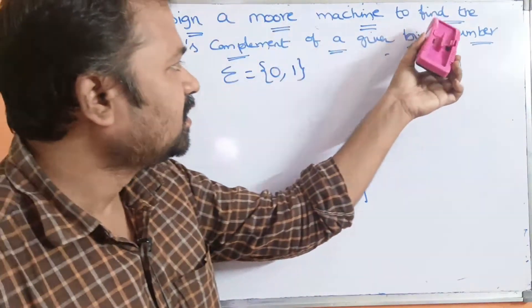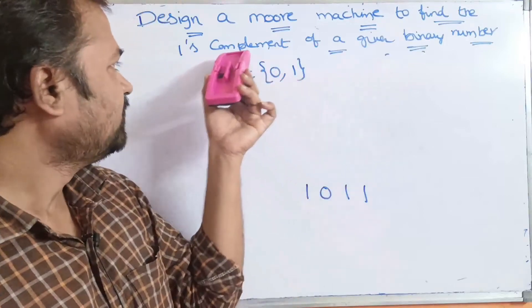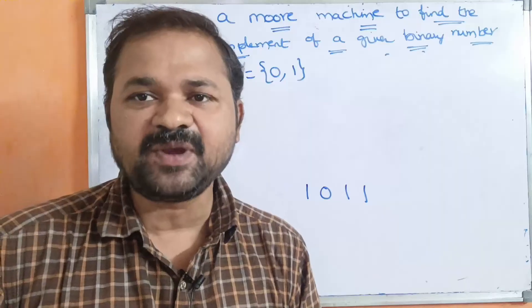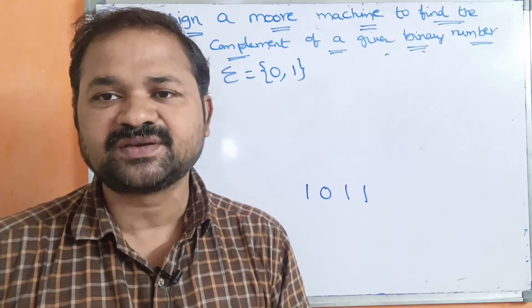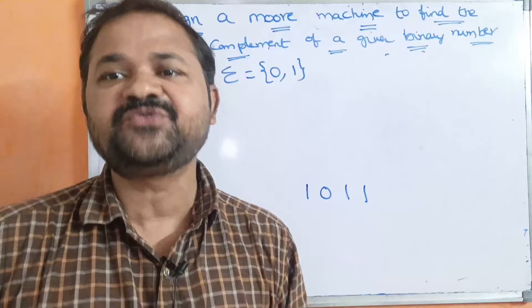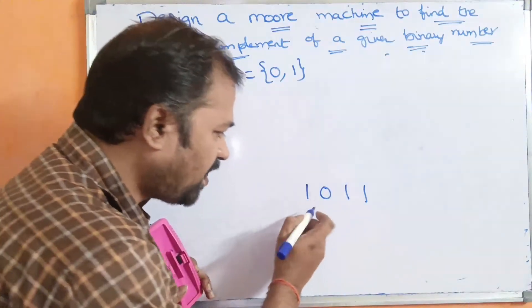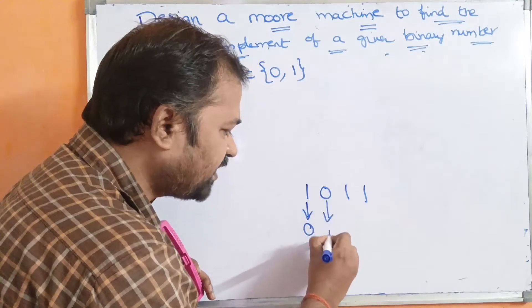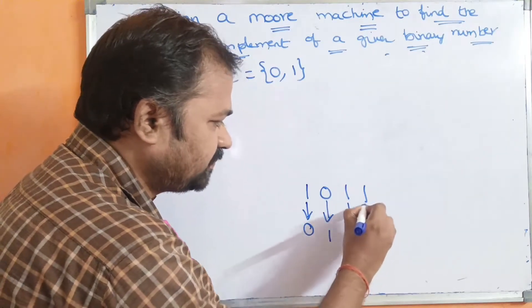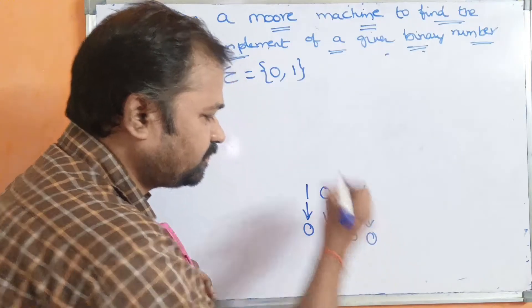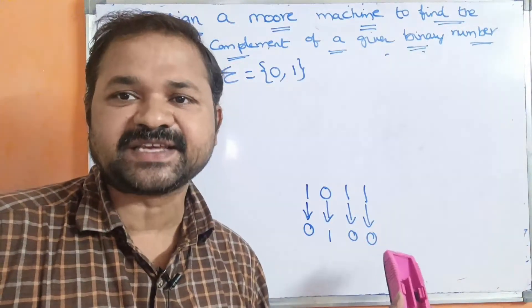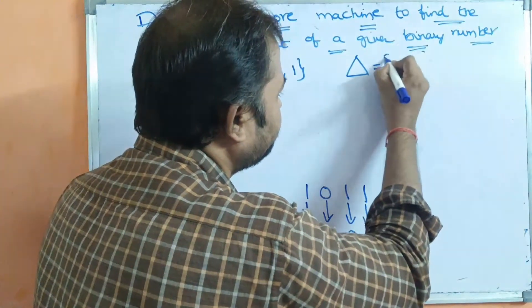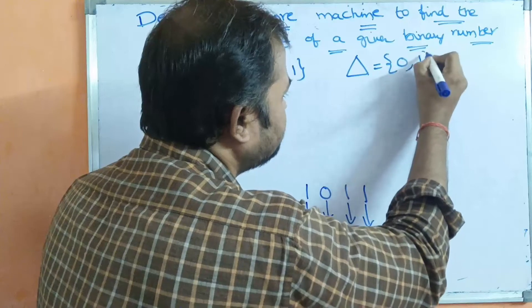Here we need to find the 1's complement of the given binary number. So what is 1's complement? 1's will be converted to 0's and 0's will be converted to 1's. So for 1011, the output is 0100. The output alphabet delta also contains 0 and 1, represented by the delta symbol.